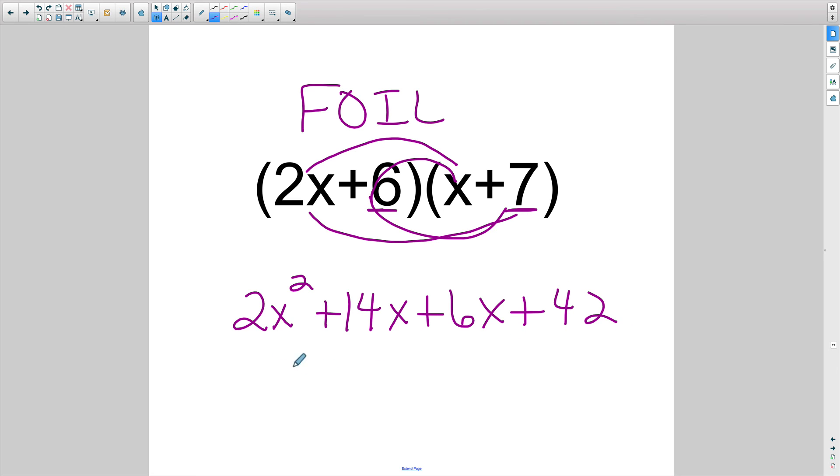Again, we're going to combine like terms. I have nothing that I can combine this one with. So I'm just going to simply bring it down. And then I have a positive 14x plus 6x, which is a positive 20x. And then I have nothing to combine this 42 with. So I'm just going to bring down the 42. And the correct answer for this would be 2x squared plus 20x plus 42.